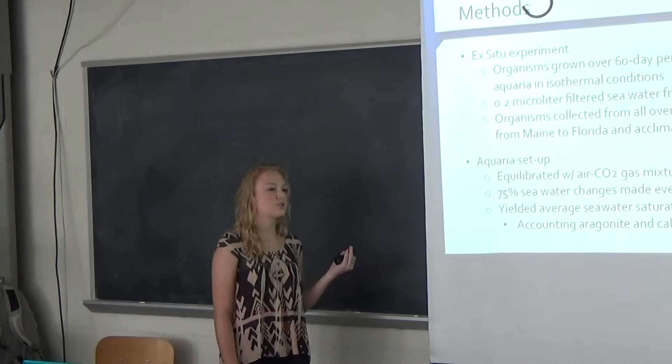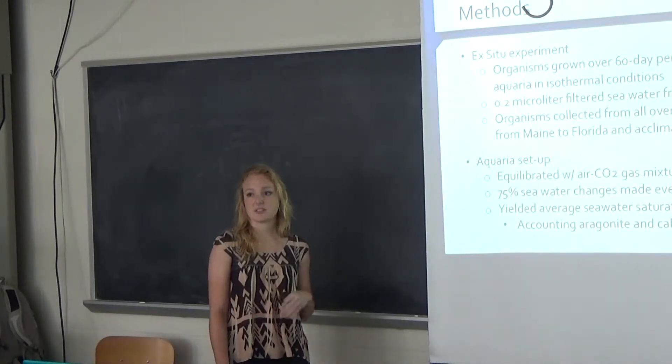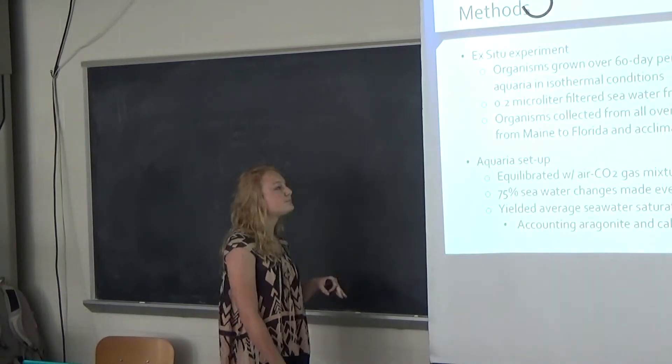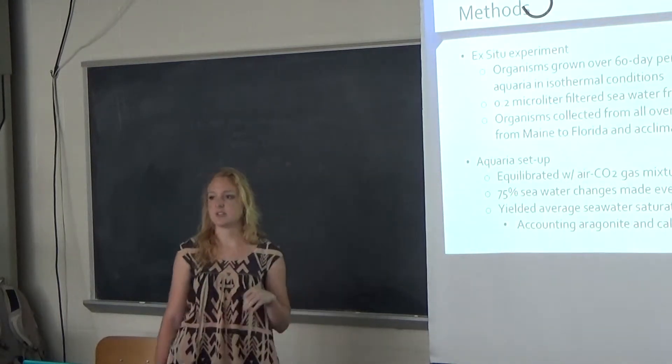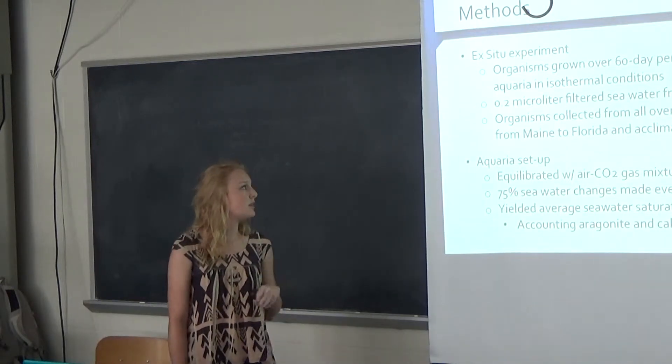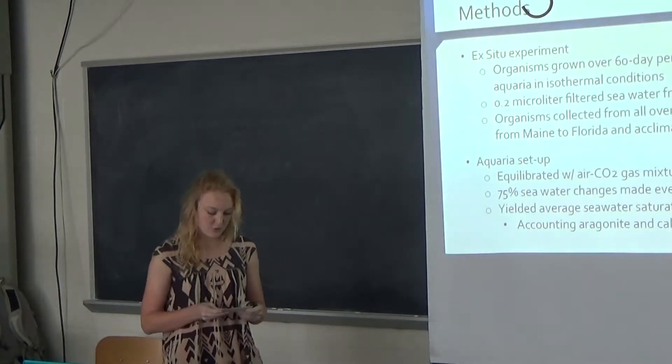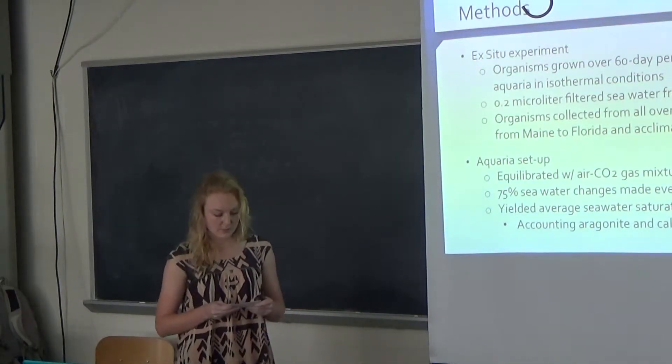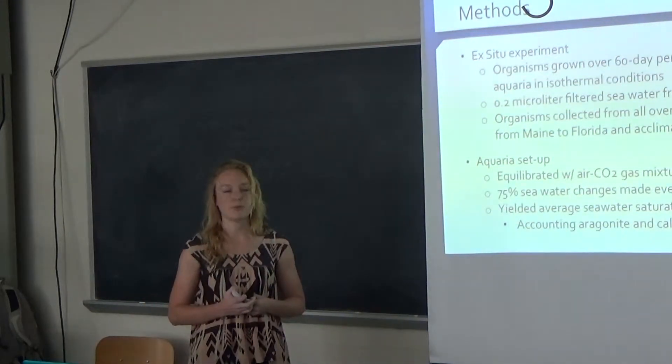Isothermal conditions is where they change all the variables but keep the temperature consistent throughout all of the aquariums. They kept it at 25 degrees Celsius for this specific experiment. The reason they do that is because the fixed temperature is necessary to maintain the range of aragonite saturation state, which I'll talk about further on in the presentation.